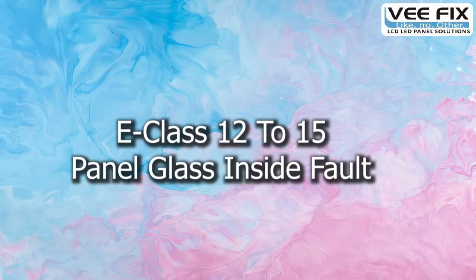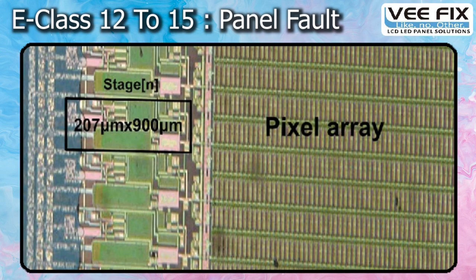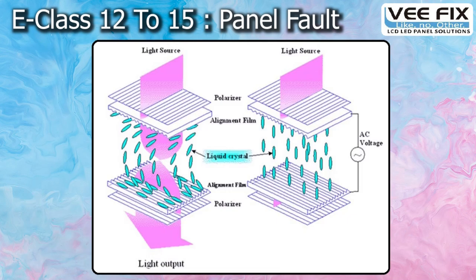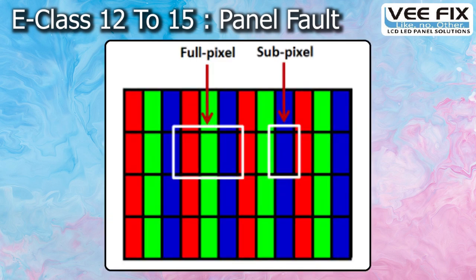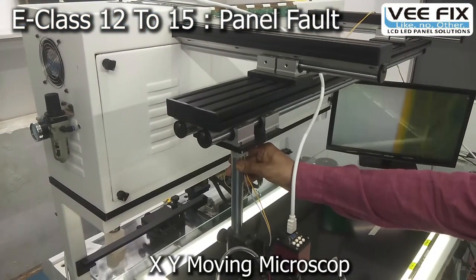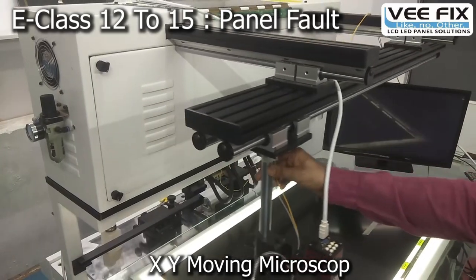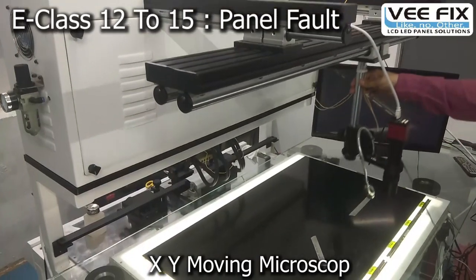After finishing the bonding section, we start with E-class 12 to 15 about the LCD panel inside faults and the working function of the LCD panel inside circuit. First, we will explain how the LCD panel works, how colors are created in the LCD panel, and basic information about the LCD panel working system. We have developed a moving microscope to observe the panel inside circuit and find faults in the panel's glass inside circuit.